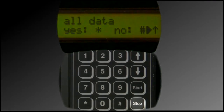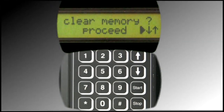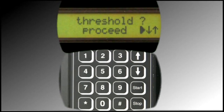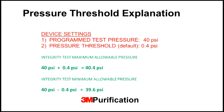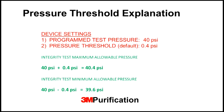If neither option is desired, press the Stop button to return to the prior menu. Press the Up arrow. This is where the Threshold Pressure setting can be adjusted. The Pressure Threshold is the range of pressure that must be adhered to once an integrity test begins. There is a lower and upper threshold value programmed in the device. The default value for both is 0.4 PSI. For example, if the programmed test pressure is 40 PSI and the pressure threshold is set to the default value of 0.4 PSI, then the device would allow for the test pressure to vary from 39.6 PSI to 40.4 PSI once the integrity test began. Failure to remain within this pressure range would yield a false result.